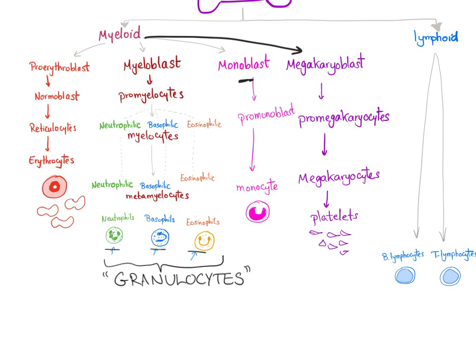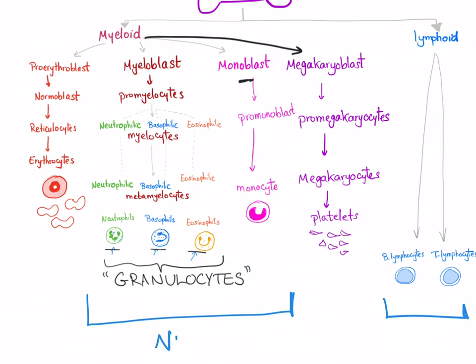Only the white blood cells — from here to here — have a nucleus. The others, such as red blood cells and platelets, are anuclear.